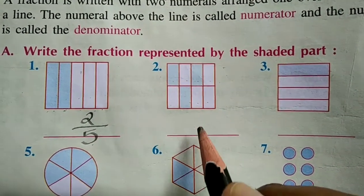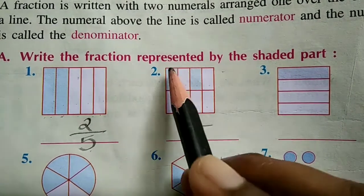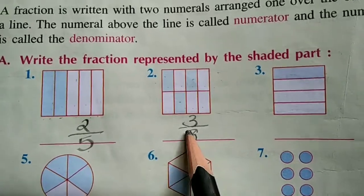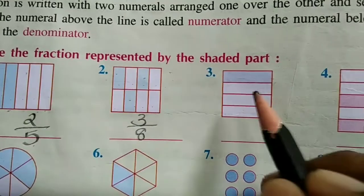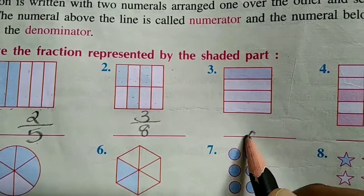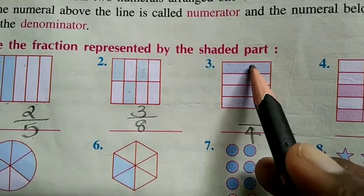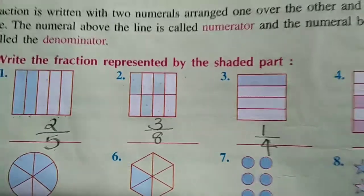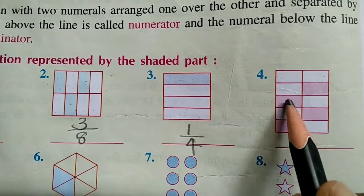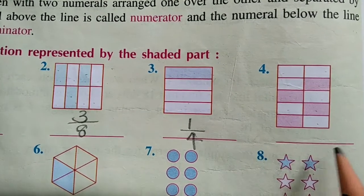8 equal parts, 3 parts shaded — shaded part fraction is 3 by 8. Next, 4 parts shaded out of 10 total parts.